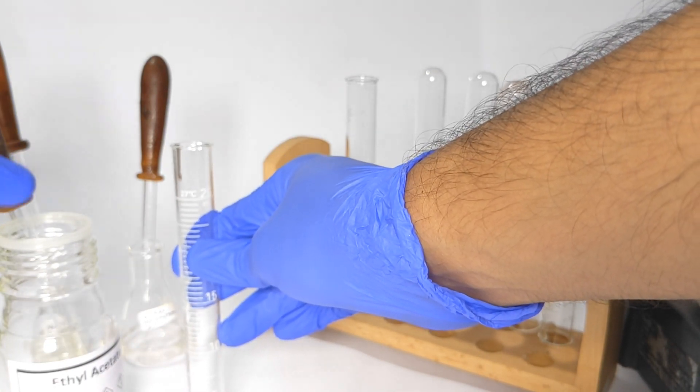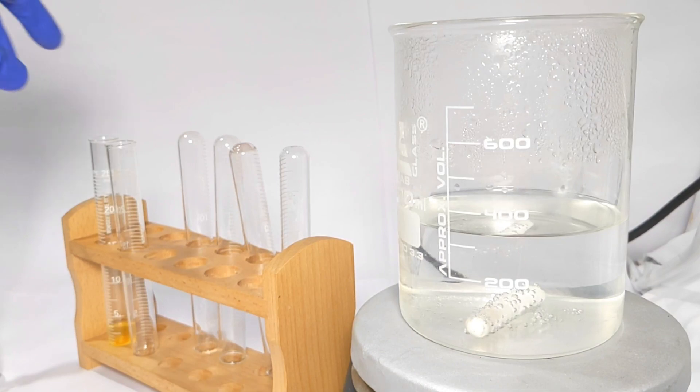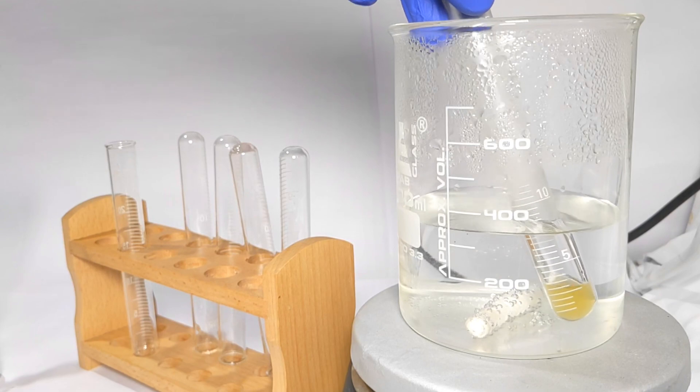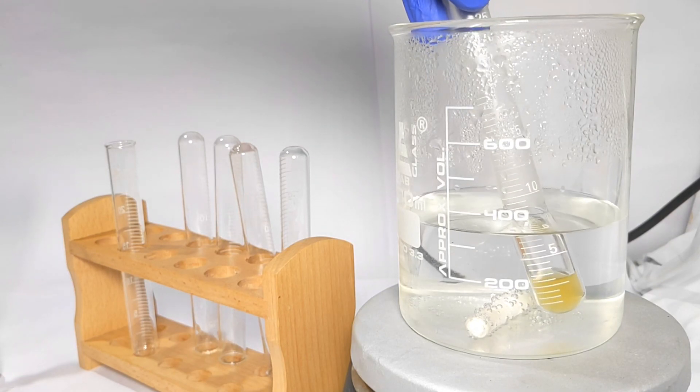Now place the test tube in a boiling water bath for about 30 seconds. This will complete the reaction resulting in the formation of a salt of hydroxamic acid.